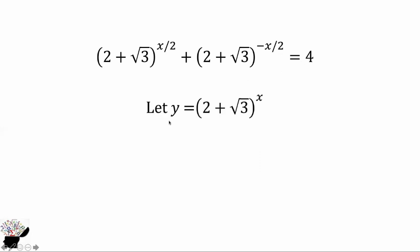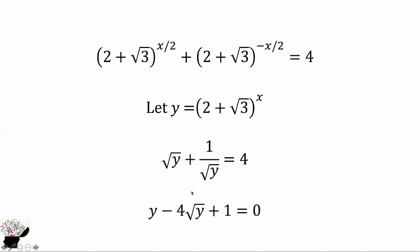So from here we can see that (2 plus square root of 3)^(x/2) plus (2 plus square root of 3)^(−x/2) is equal to 4. Now we let y represent (2 plus square root of 3)^x. So we get square root of y plus 1 over square root of y equals 4. Multiplying through by square root of y, we get y minus 4 times square root of y plus 1 equals 0.